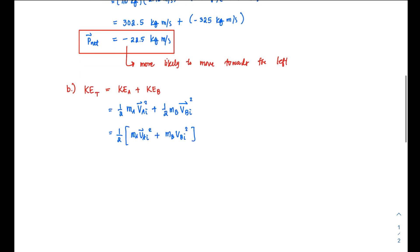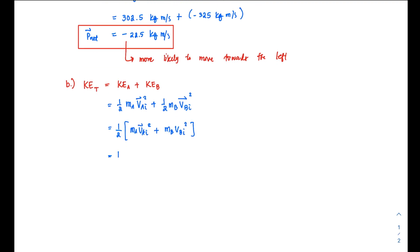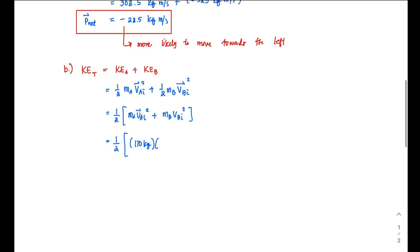we just substitute the values: 1/2, m_A is 110 kg, v_A,i is 2.75 m/s. You have to take special note of the signs again, but in this case signs won't matter much